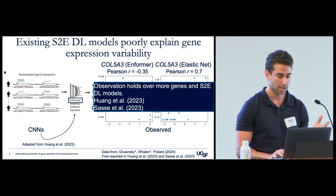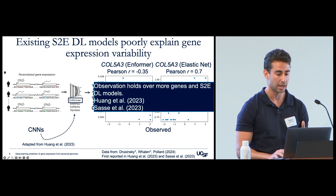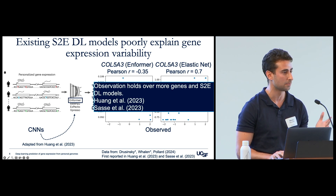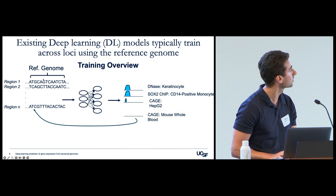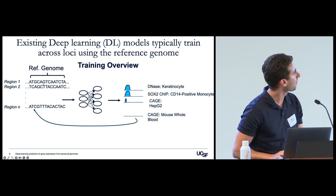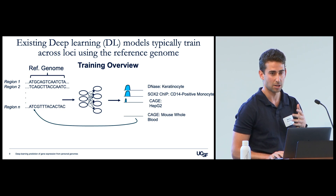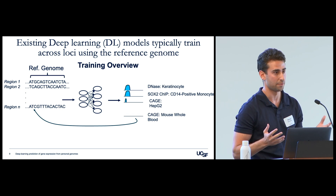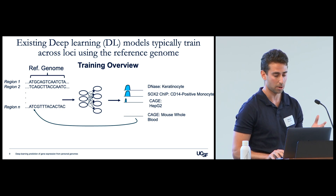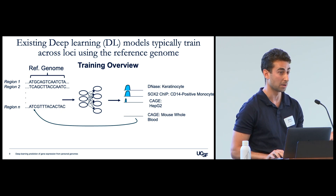This was first reported by Sase et al. and Huang et al. last year, where they showed that sequence-to-expression deep learning models, not just Informer, underperformed simple linear models on most genes. Given this result, it's interesting to consider how these models were trained: by taking DNA sequences from the reference genome and optimizing on results from various assays measured in cells that do not have the reference genome. This has led to state-of-the-art models, but I've wondered whether this could be limiting model accuracy.